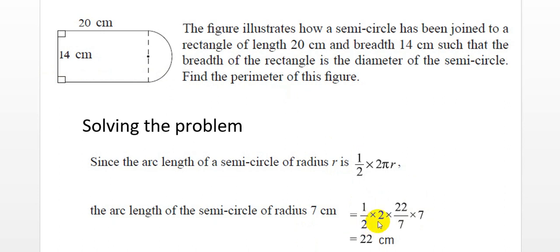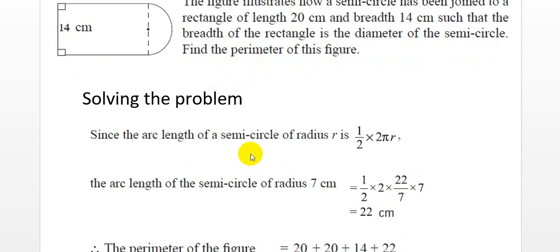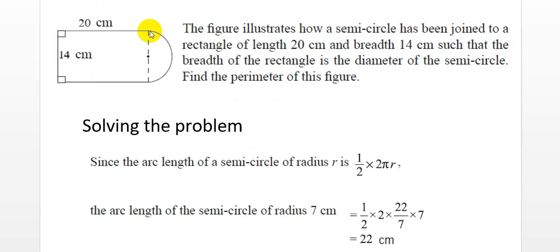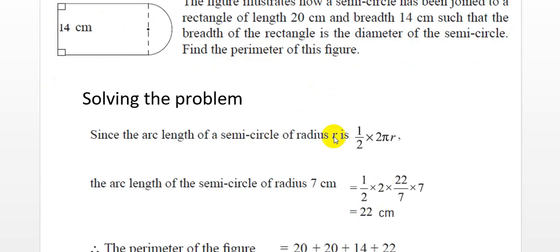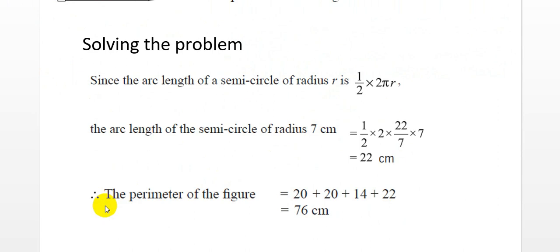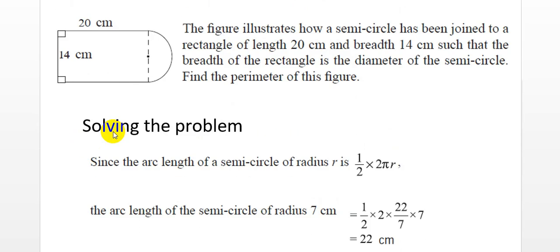We can cancel the 2s and also cancel the 7s, so the numerator value remaining is 1 × 22 = 22 centimeters — that is the arc length of this semicircle. Now we have all the lengths: 20 cm, 14 cm, 20 cm, and arc length 22 cm. Therefore, the perimeter of the figure equals 20 + 14 + 20 + 22 = 76 centimeters. This is a very straightforward and easy question you will get in your O-Level examination.